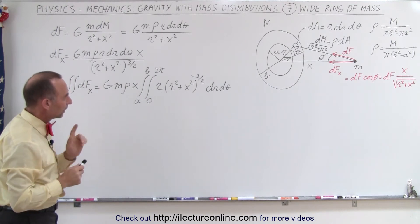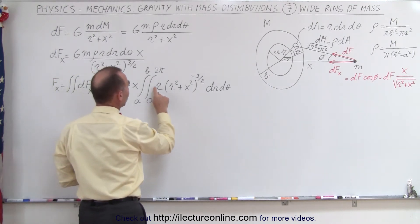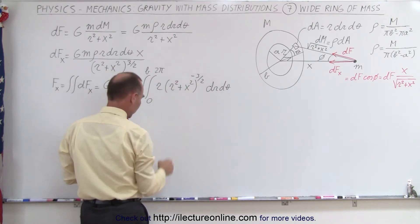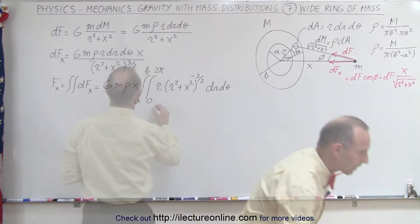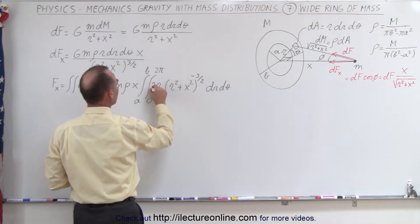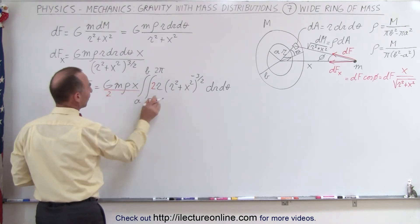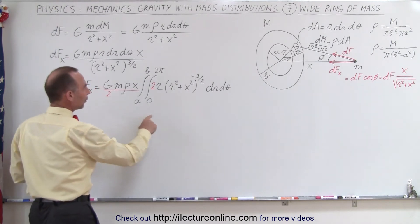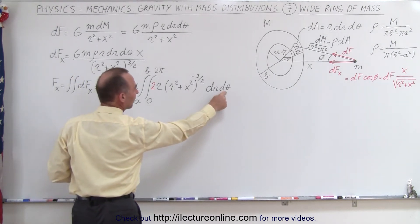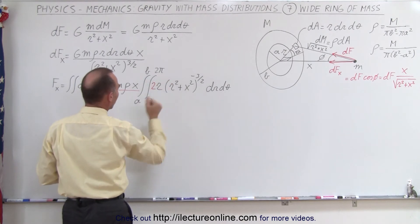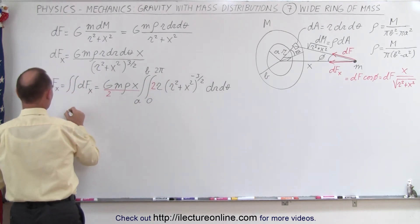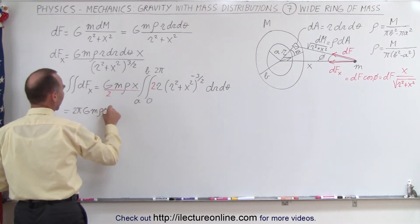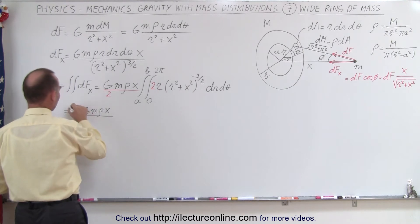To integrate properly, we need the differential 2r dr since we have r² inside the parentheses, so we insert a factor of 2 and divide by 2 to compensate. When we integrate over dθ, that gives θ evaluated from 0 to 2π, which is simply 2π. So the result becomes 2π times GM·ρ·x over 2, and the 2s cancel.